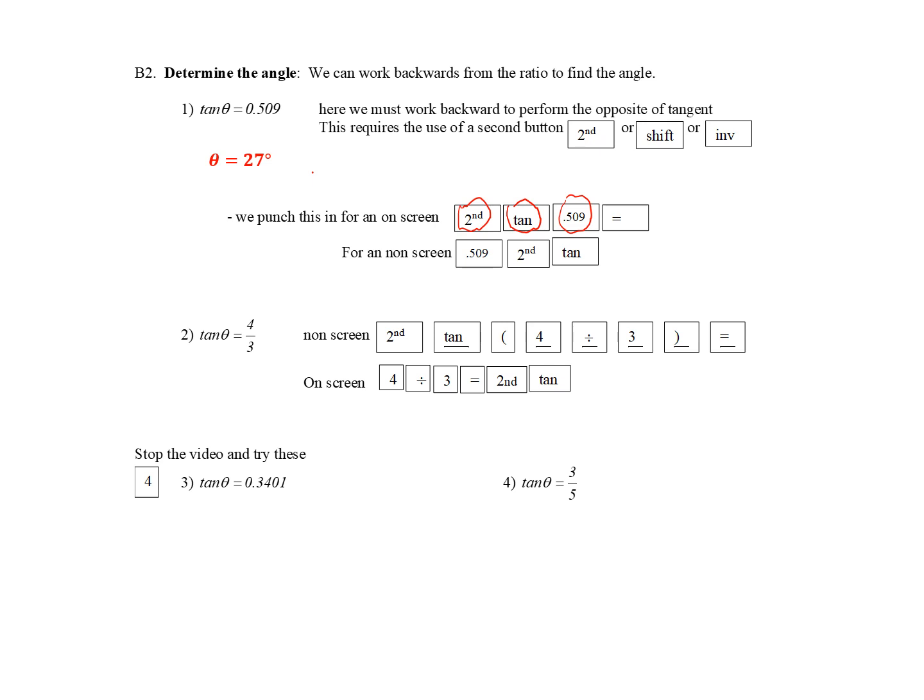Now what happens if we wind up having a fraction instead of a decimal? We do exactly the same thing: second function tangent. But since we're doing the entire fraction, we must have a bracket, then 4 divided by 3, close bracket, equals. If you have on-screen, you'll find it's easier because you can just put in 4 divided by 3, equals, then second function tangent. Stop the video now and try the next two questions. You should have gotten these answers.